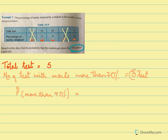The probability of getting more than 70 percent is 3 tests over the total 5 tests, so 3 by 5, which equals 0.6. That is the probability of scoring more than 70 percent marks.